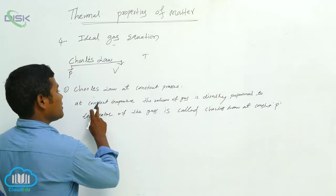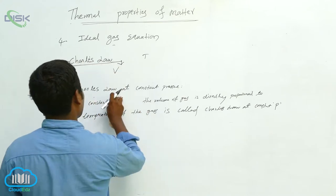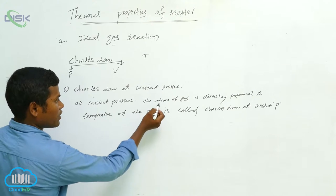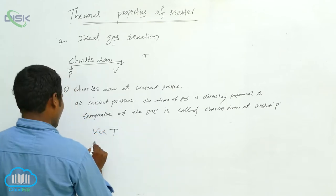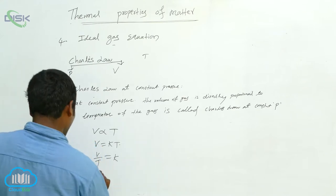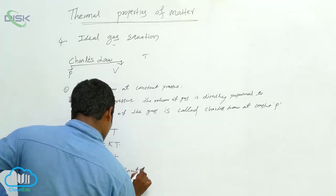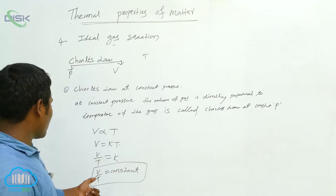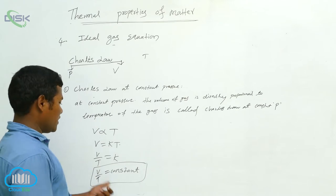What is constant here? Pressure is constant. Volume is directly proportional to the temperature. So we write V proportional to T. Remove the proportional sign and write constant K. Then V by T is equal to K, or V by T is equal to constant. At constant pressure we get the relation V by T is equal to constant.